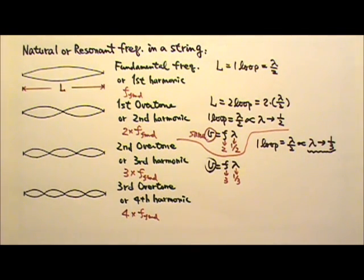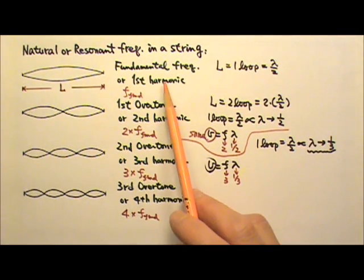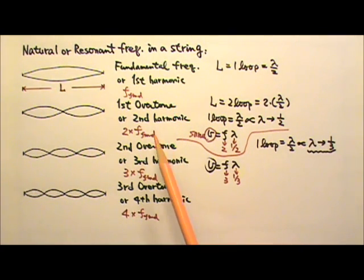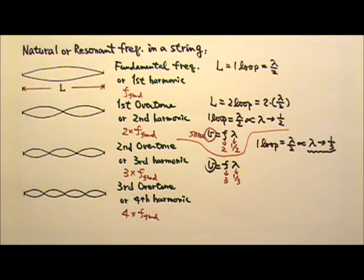So if a string's fundamental frequency is 100 Hz, its overtones will be 200, 300, 400, 500 Hz, etc. The nth harmonic will be n times 100 Hz.